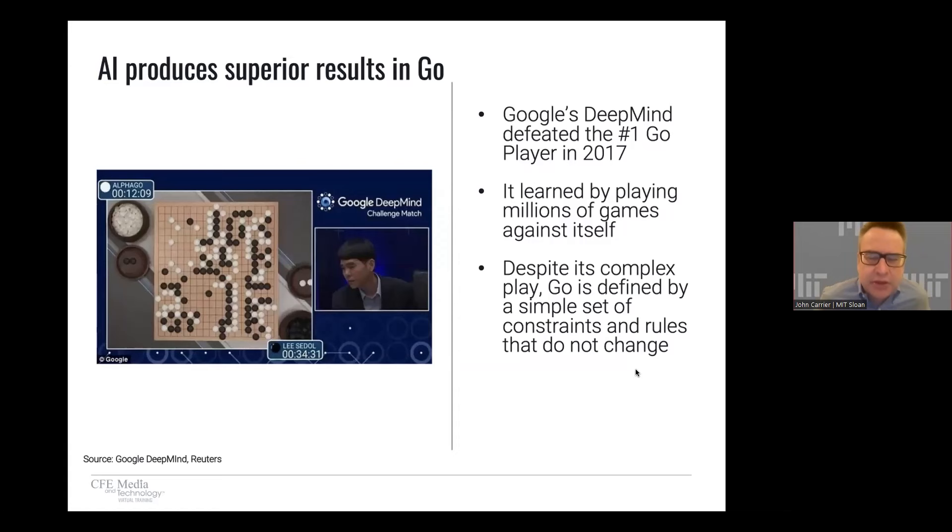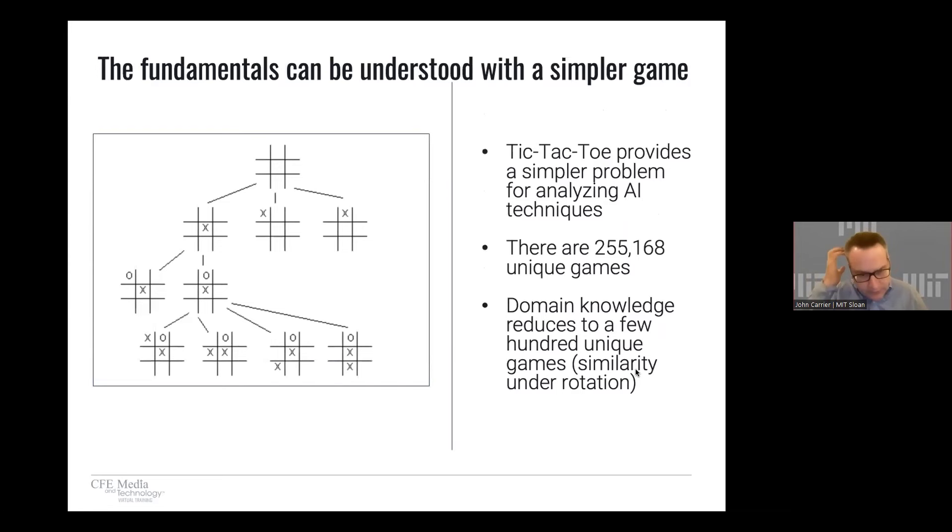Again, AI can produce some superior results. We know that back in 2017, Google's DeepMind defeated the number one Go player. It did it by basically playing millions of games against itself. Now, why this is interesting is, although it had to do all these simulations, Go is a relatively simple game. It's a board, it's got so many pieces, it's got so many squares, that never changes. So all these games played millions of times, all those are very clean data sets. AI works very well in these well-defined environments, but it starts to break down when we get against real world complexity and noise.